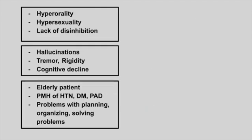Next is a patient who presents with hyperorality, hypersexuality, and disinhibition. This is frontotemporal dementia. This affects the frontal lobe and so they can have problems with decision-making as well.